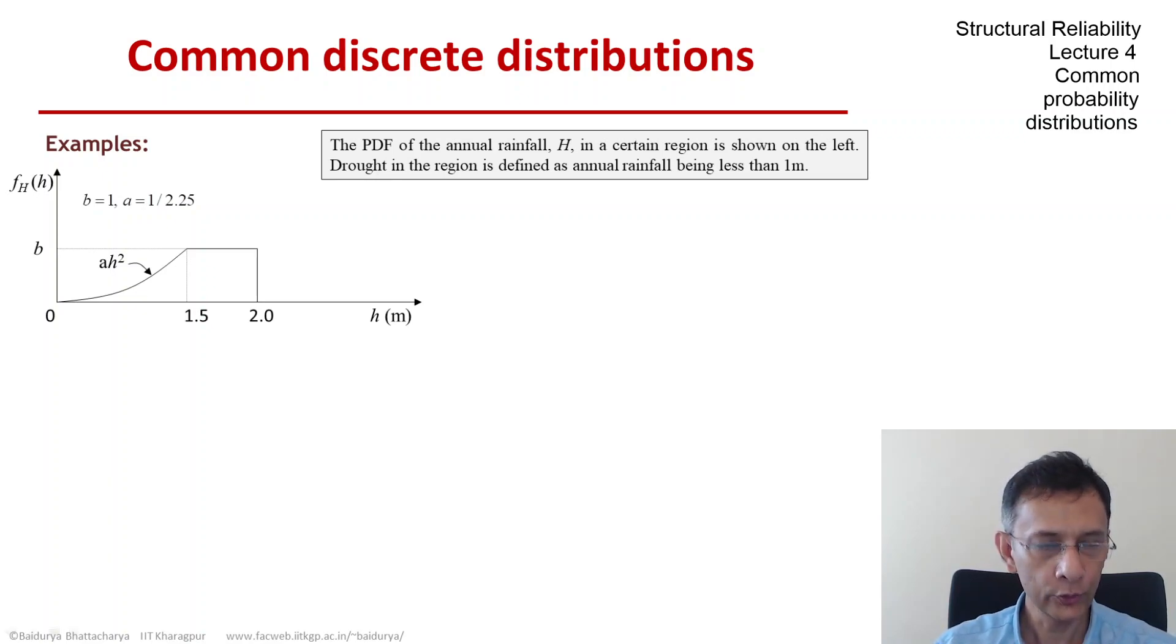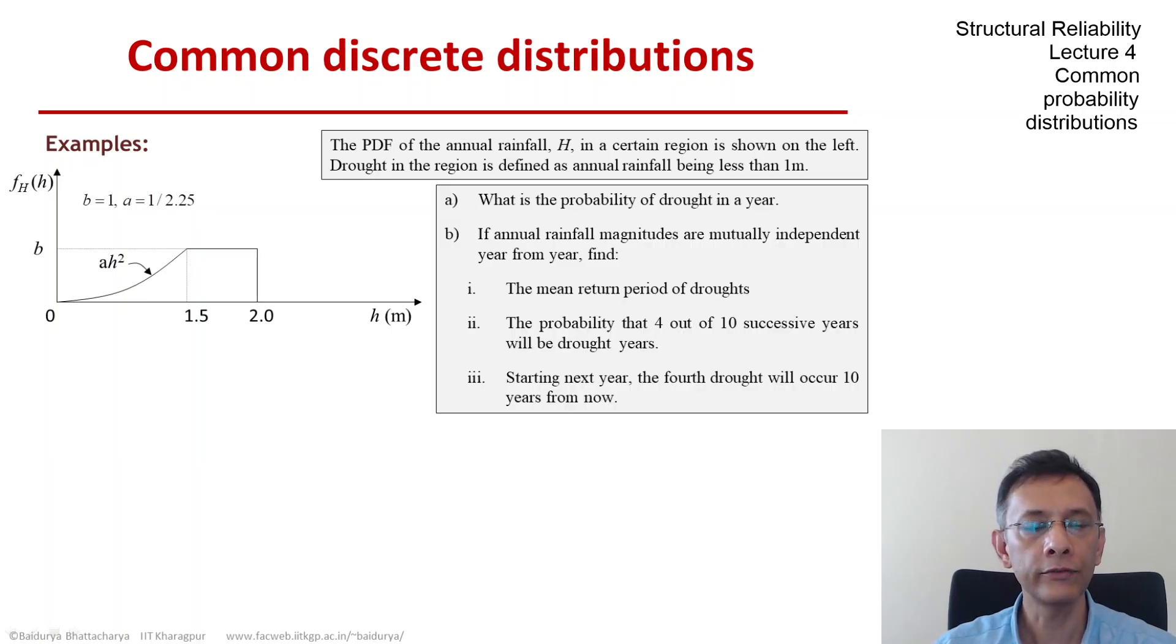We go back to this rainfall example we have looked at before. The first question we ask is what is the probability of drought in any given year?